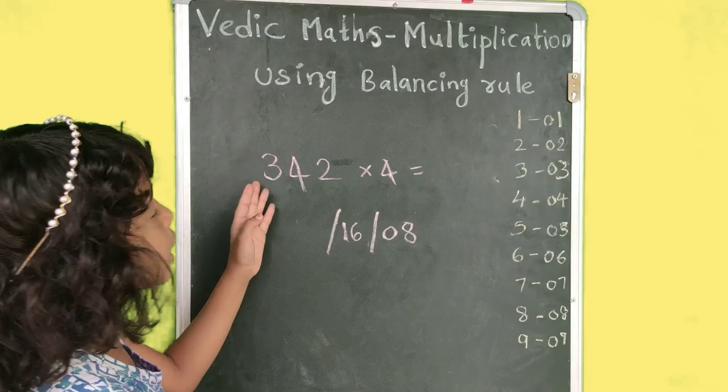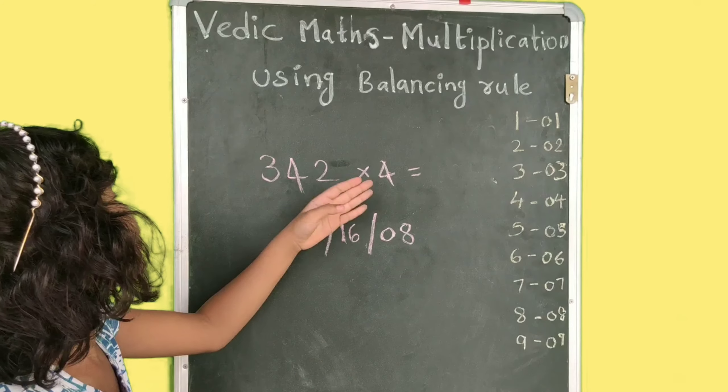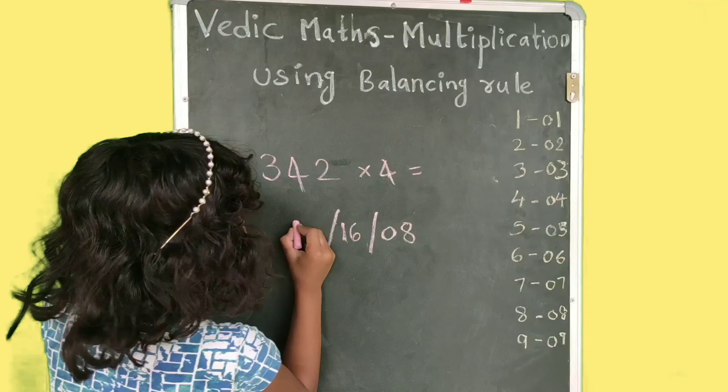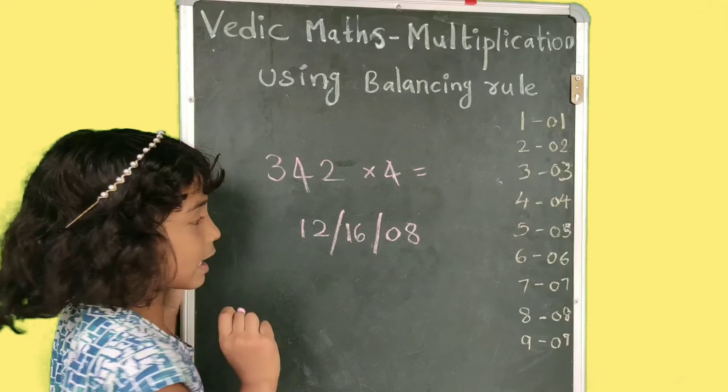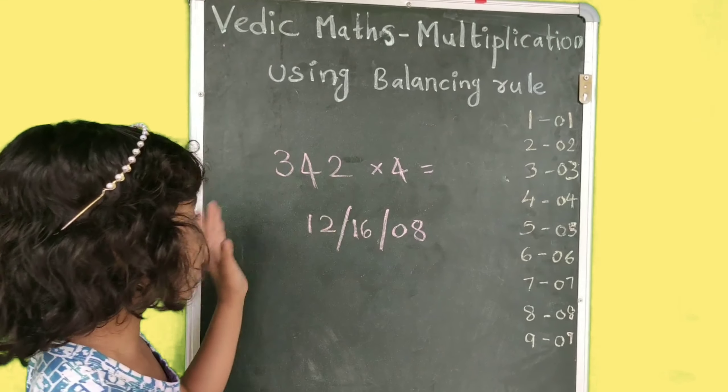Slash, e4 ni e3 ni multiply chedhaan. Four, three star, twelve. E12 ki, twelve, alaagi bese kundhaan. Friends, ikpdu, this is balancing rule.